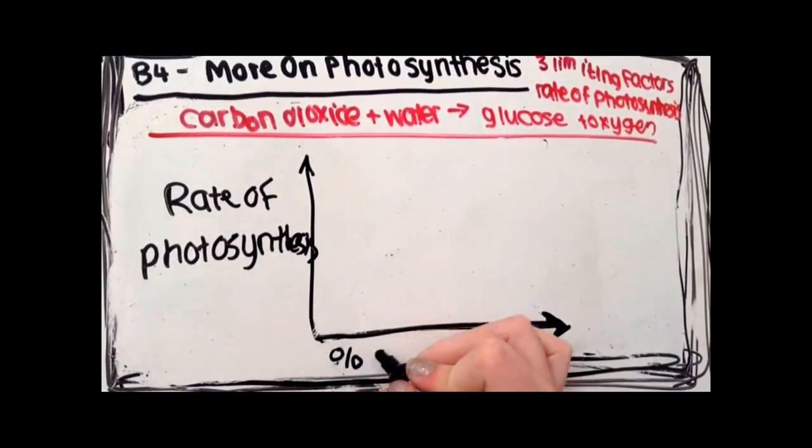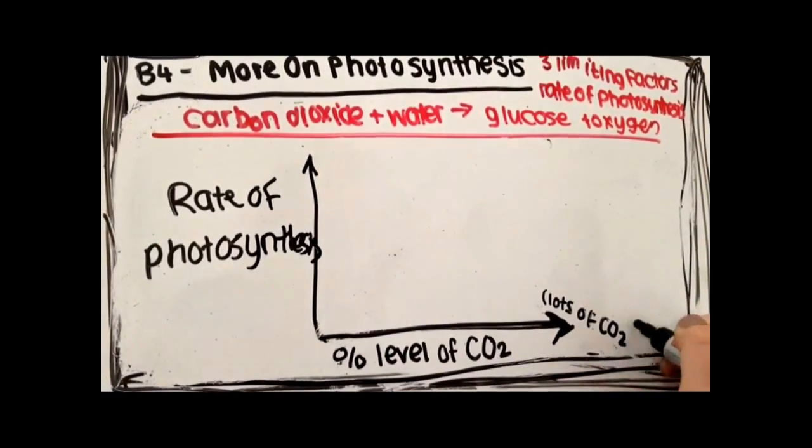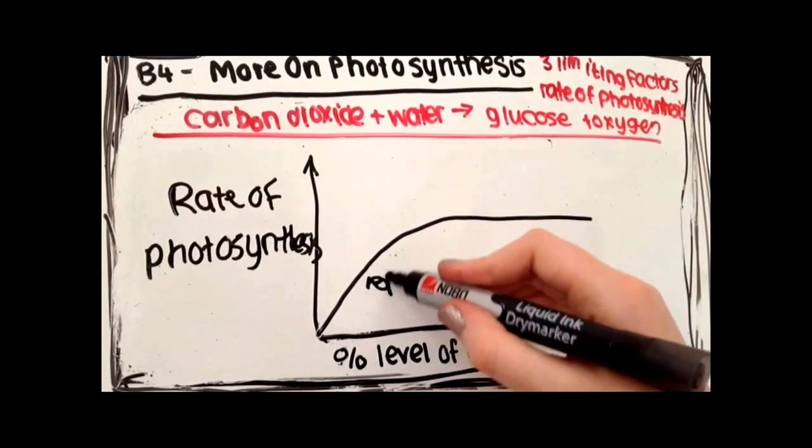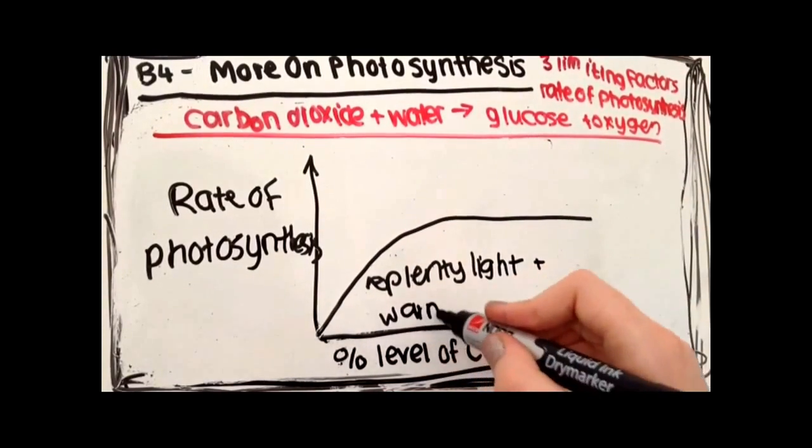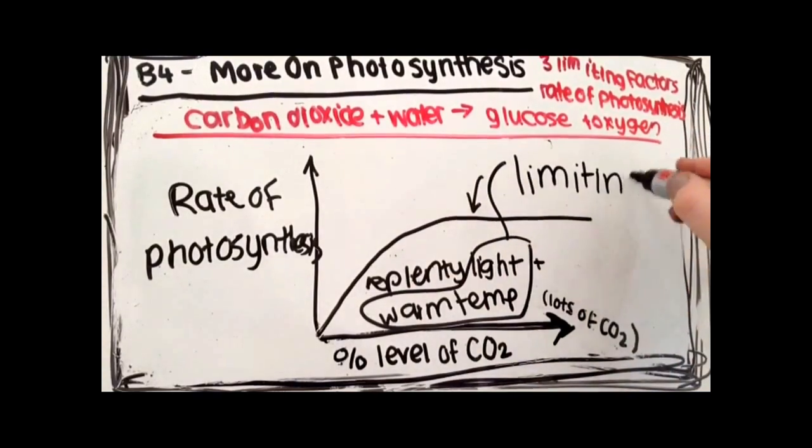Another limiting factor is carbon dioxide. As with lighting intensity, the amount of CO2 will only increase the rate of photosynthesis up to a point. After this, the graph flattens out, showing it is no longer the limiting factor.